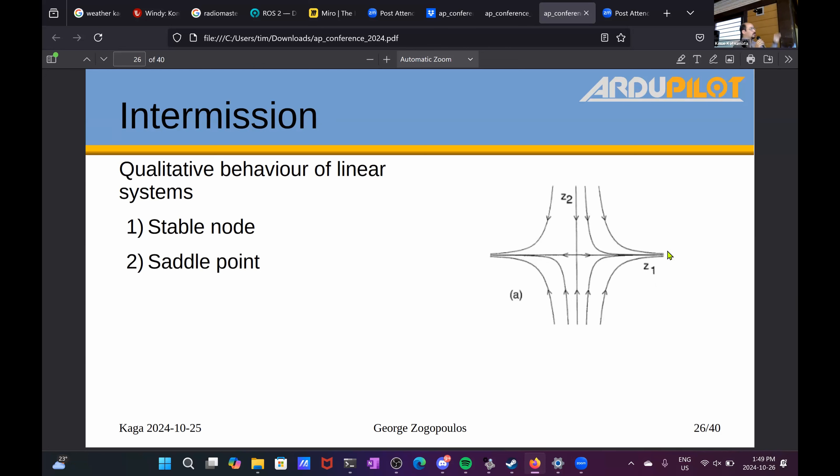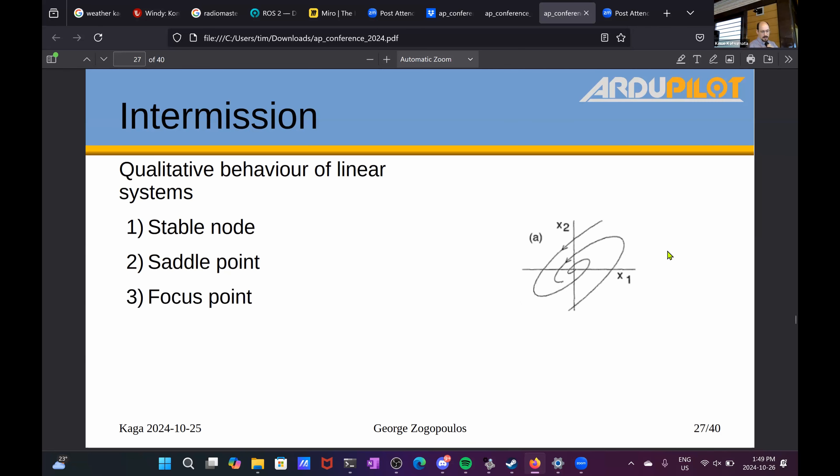If it was a saddle point, so-called saddle point, it would converge on one state, on the vertical state, but it would diverge on the other horizontal state. Or it could be a focus point describing circles around that two-state system, eventually ending up at the origin but through some oscillation.